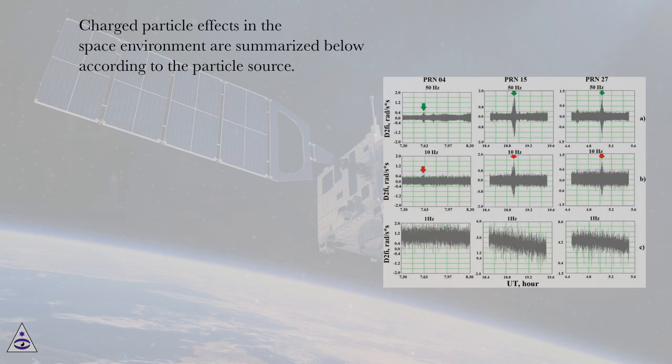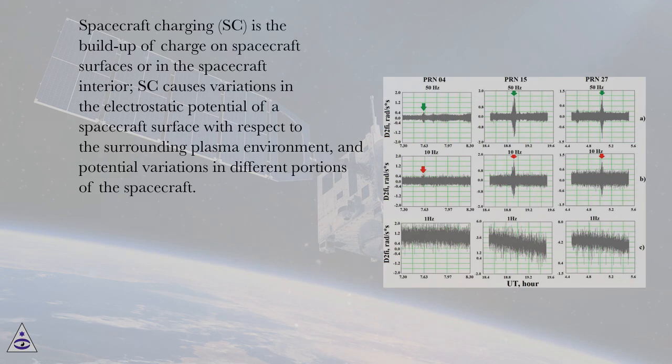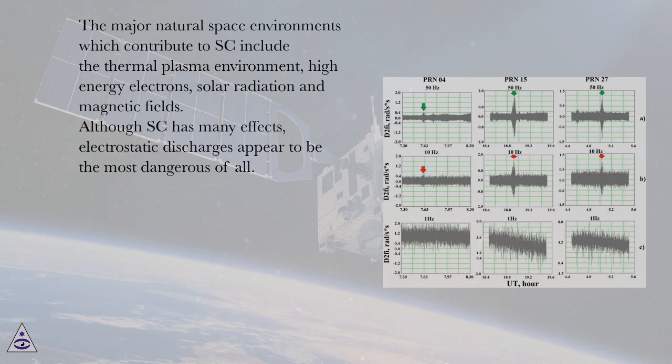Charged particle effects in the space environment are summarized below according to the particle source. Spacecraft charging (SE) is the buildup of charge on spacecraft surfaces or in the spacecraft interior. SE causes variations in the electrostatic potential of a spacecraft surface with respect to the surrounding plasma environment and potential variations in different portions of the spacecraft.